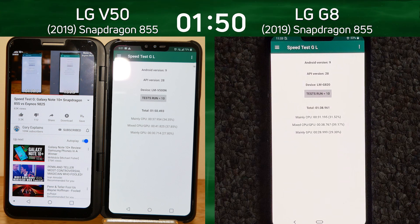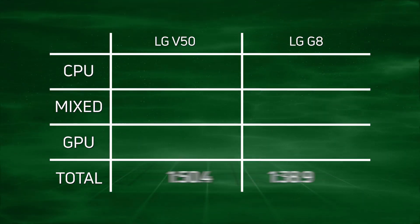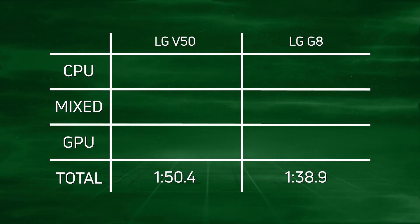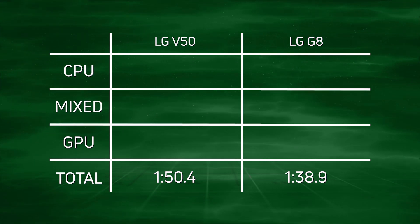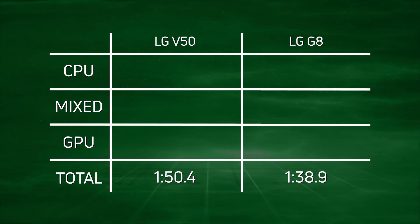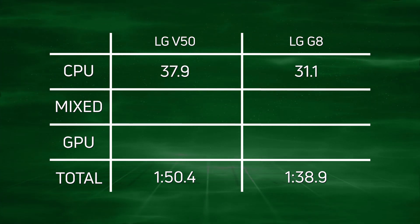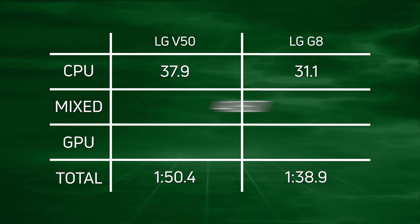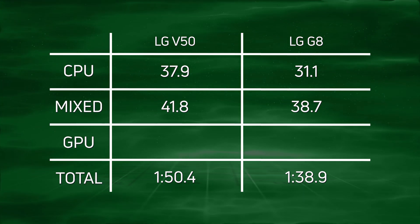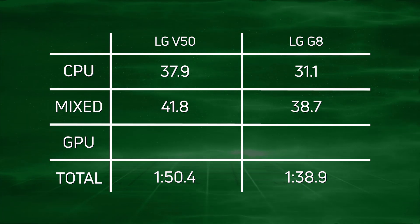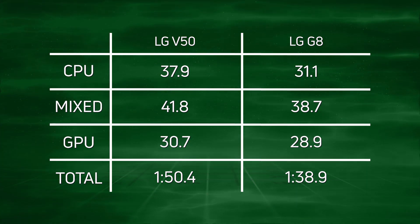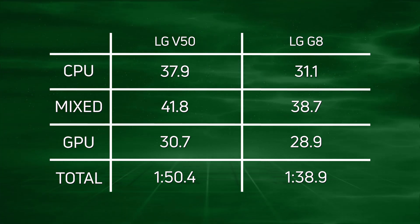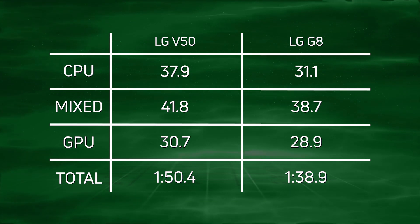Let's break down those scores. The clear winner was the LG G8 with 1 minute 38.9, and coming in later the LG V50 with 1 minute 50.4 — but remember it was powering both screens and running a YouTube video on the second screen. Looking at CPU times: 37.9 versus 31.1, a significant lead for the LG G8. In the mix: 41.8 versus 38.7, again a clear win for the G8. And in the GPU: 30.7 versus 28.9 — a clear win in all three categories for the LG G8, giving it an overall time of 1 minute 38.9.